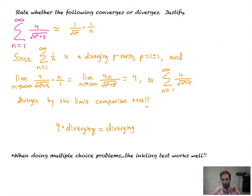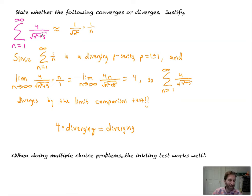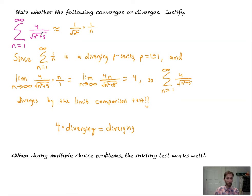If you're doing multiple choice tests, the inkling test works. You don't have to show any of this unless you're unsure — I would look at that and say it's basically one over N, it's going to diverge. That'll help you a lot on the BC exam. I'm going to leave it there. That was fun. I hope you had a tolerable time, maybe a little bit. See you next time. Peace.